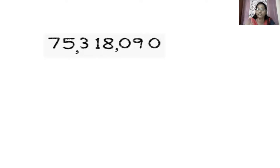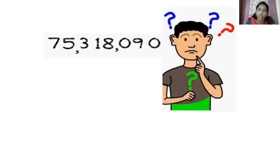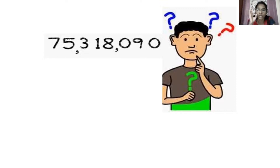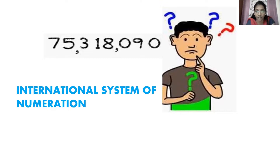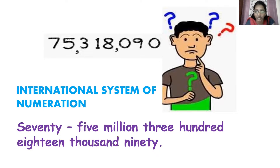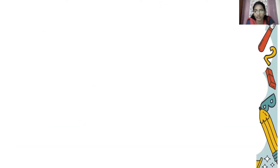Now I give you another numeral — the same numeral, but with commas shifted to different places: 75,318,090. Think in which system is this numeral. In ones period you have three places, and in thousands period you also have three places. So this is according to international system of numeration. And what's the name of this number? 75,318,090. Again, the spelling of 90 — N-I-N-E-T-Y.